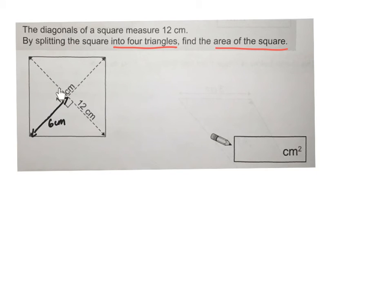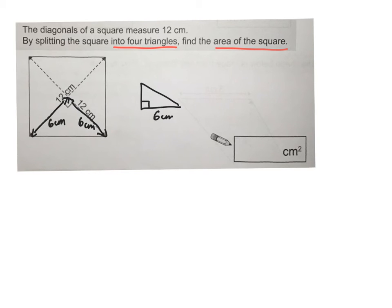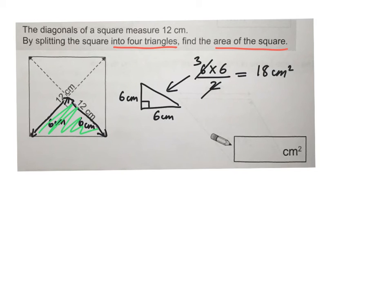Also, across this way, if it's 12 centimetres across, then half of the diagonal here has to be also 6 centimetres. Here we have a right-angled triangle with dimensions 6 centimetres by 6 centimetres. So it's a right-angled triangle which has a base of 6 centimetres and a height of 6 centimetres. The area of this triangle is base times height divided by 2: 6 times 6 divided by 2. 6 divided by 2 is 3. 3 times 6 is 18 centimetres squared.